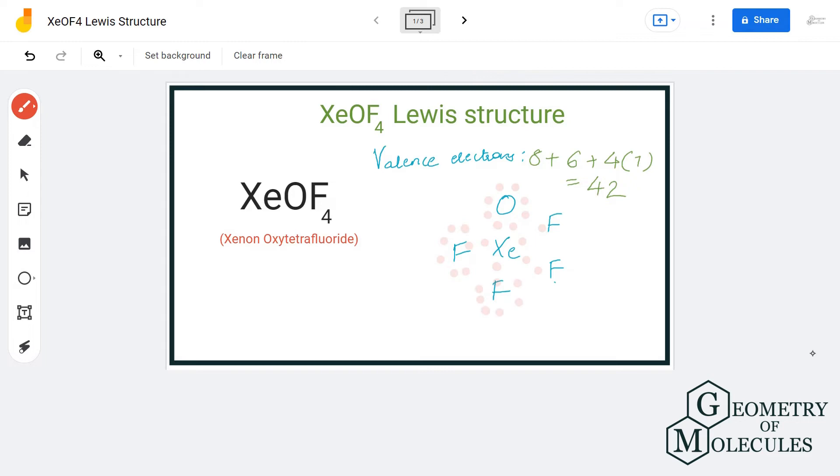These two electrons will be placed on the xenon atom because it is an exception to the octet rule and can accommodate more than eight valence electrons in its outer shell. So we will place these two electrons on the xenon atom.